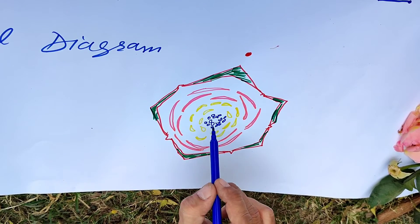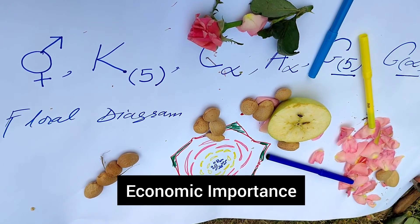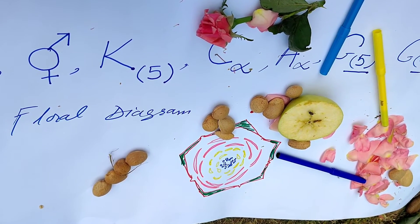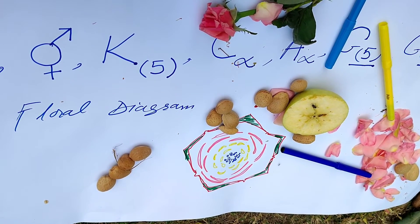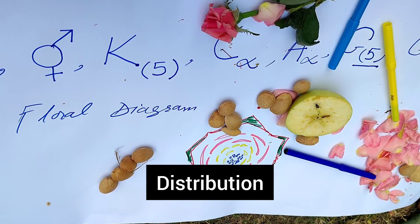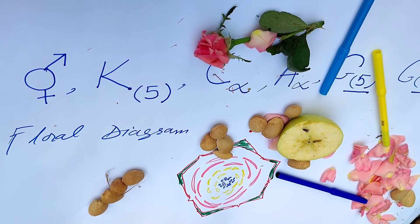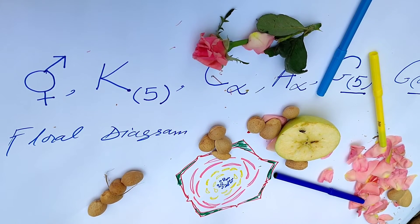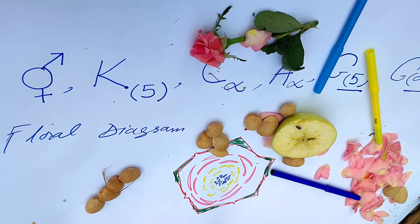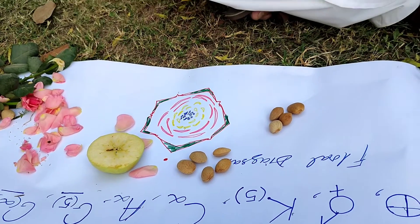Family Rosaceae has a large number of commercial values and is the third most important commercial family of angiosperms, mostly represented in colder, tropical, and temperate regions of the world. There are about 100 genera and 2000 species worldwide. The most popular genera include Rosa, Pyrus, Prunus, and Fragaria. It is an important family for fresh fruits — plum, apple, peach, pear, cherry, raspberry — and dried fruits such as almond, apricot, and other important fruits.